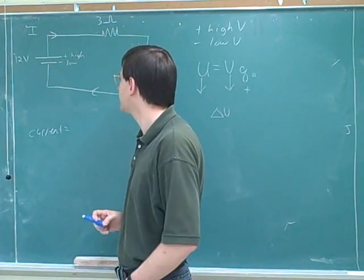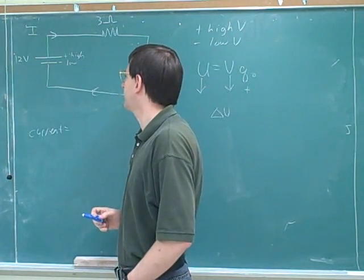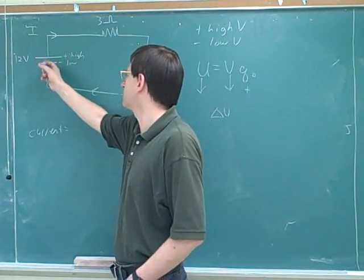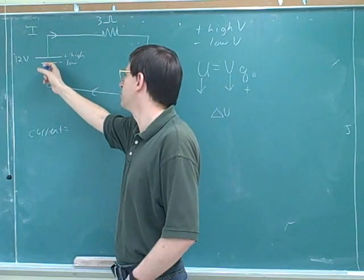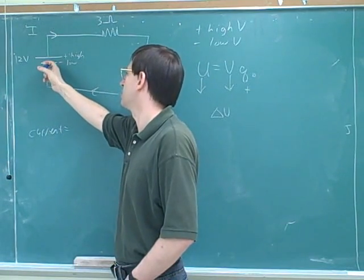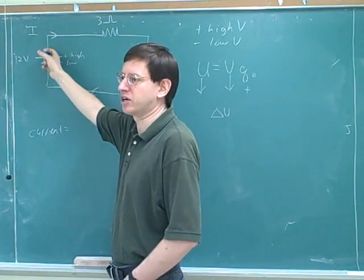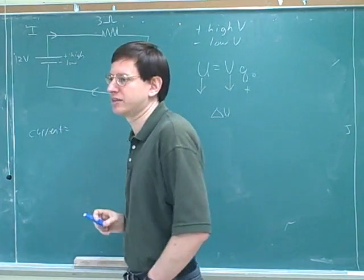That's a really useful analogy to think of this as a ski lift. Just like a ski lift would move skiers from low to high, the battery is moving the positive current — or positive charges — from low to high.